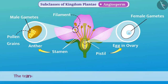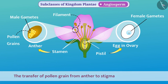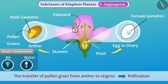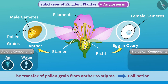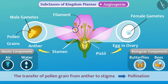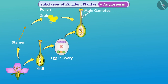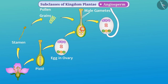The transfer of pollen grain from anther to stigma is called pollination. It takes place with the help of abiotic components such as air and water, or biological components such as insects and animals like butterflies and bees. Two male gametes from the pollen grain are released into the ovary by the pollen tube.